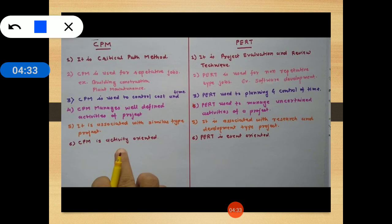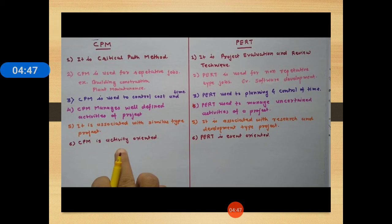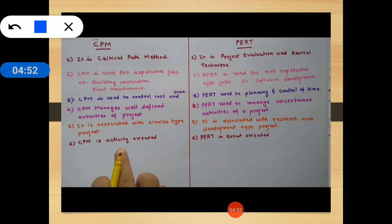To summarize the comparison: CPM stands for Critical Path Method and PERT for Project Evaluation and Review Technique. CPM is used for repetitive jobs. CPM is activity-oriented while PERT is event-oriented.